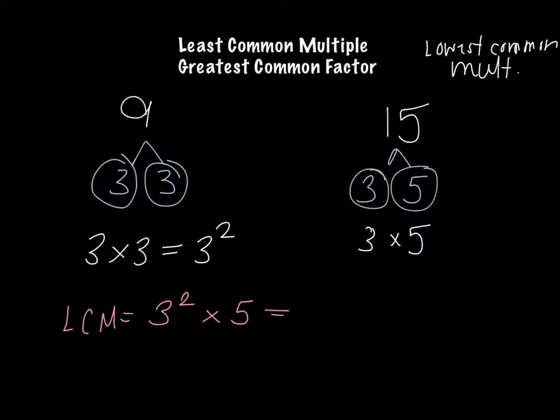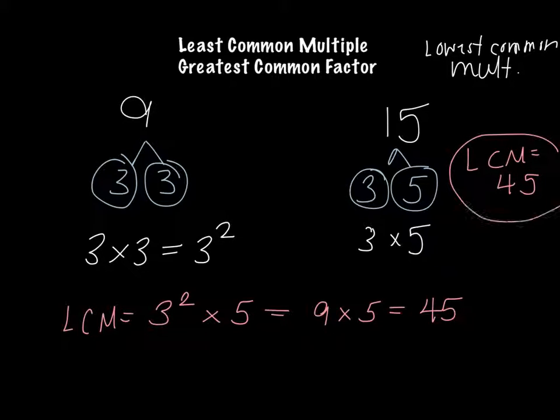Three squared is the same as nine times five, therefore my least common multiple is 45. Now I can tell if my answer is correct. If nine can be divided easily and evenly into 45, and if 15 can be divided evenly into 45, then it's correct. Nine times five is 45, and I know 15 times two is 30, so 15 times three must be 45. Let's check our math. Three times five is 15, three plus one is four. Yes. So our least common multiple is 45.